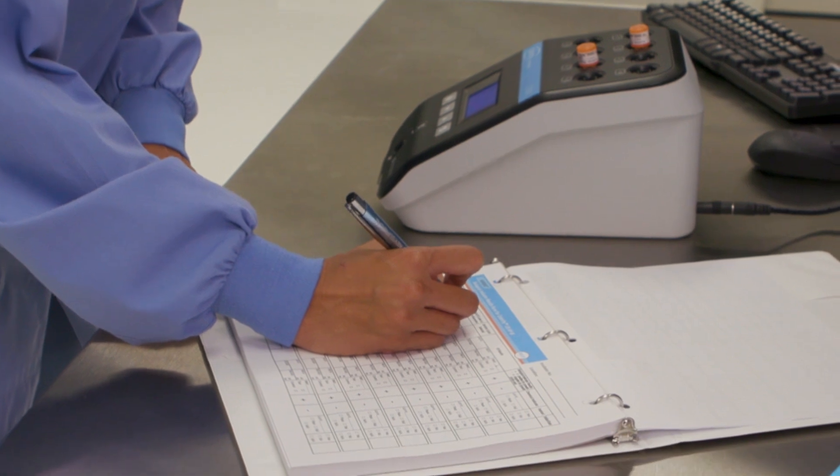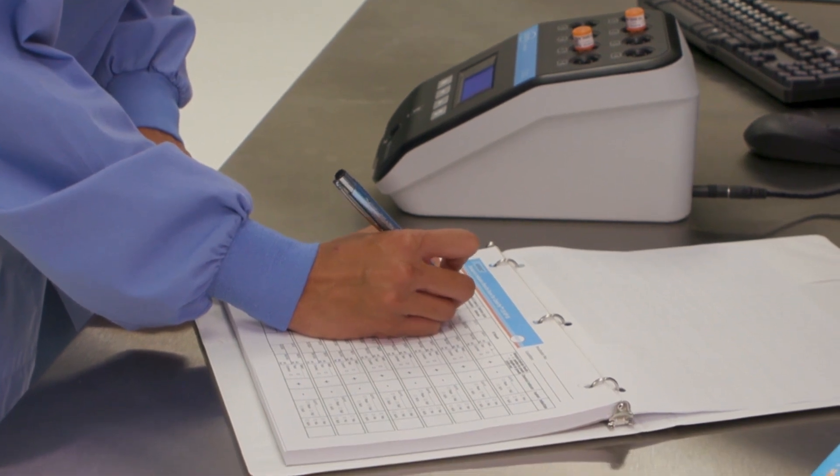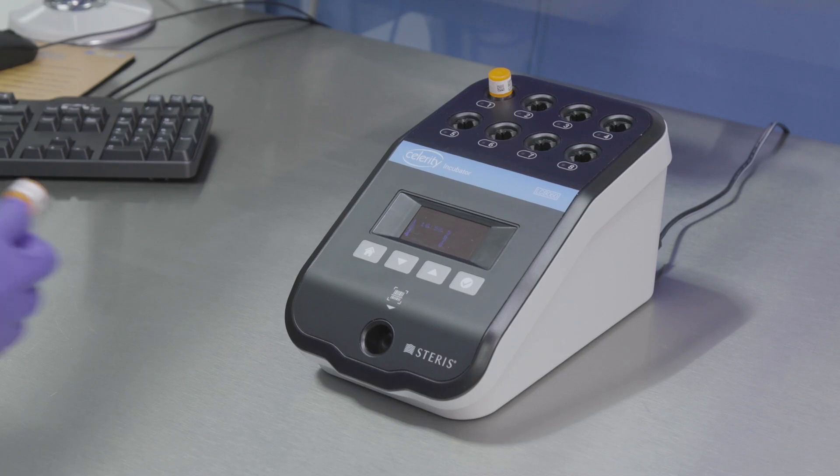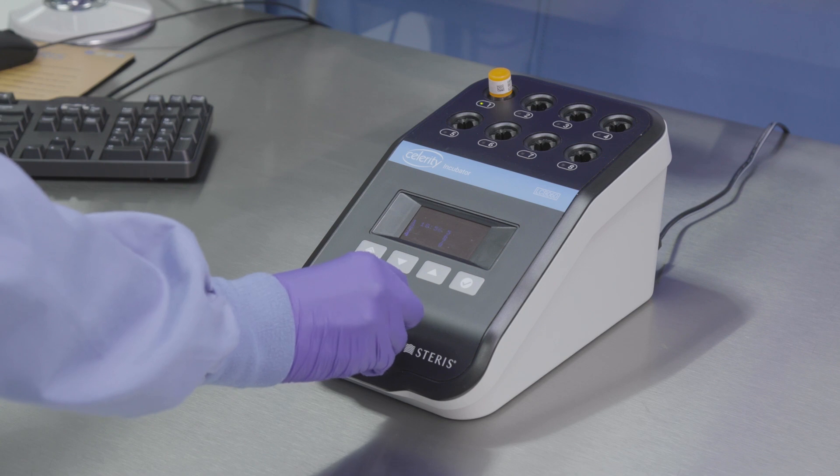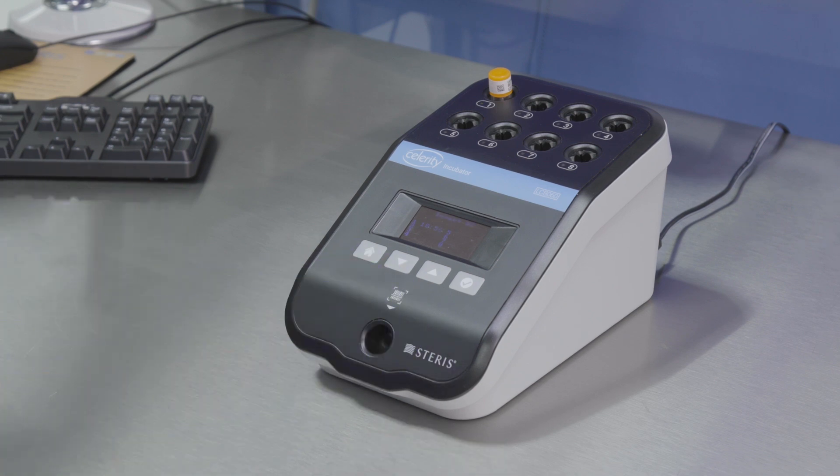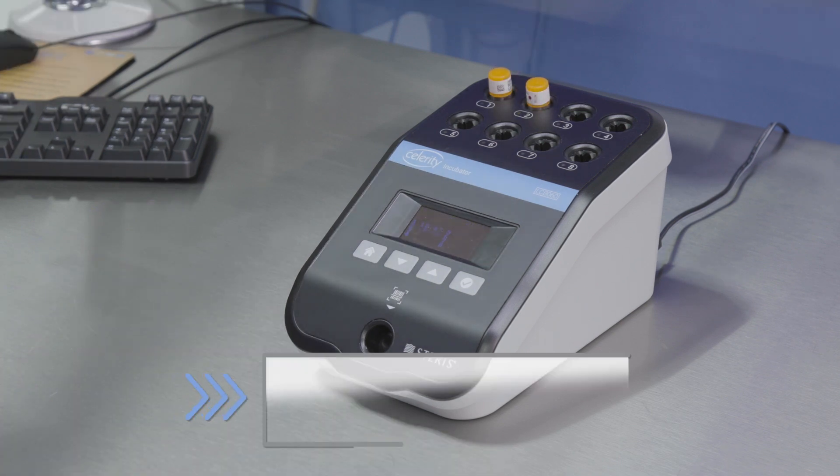Biological controls should be performed each day a test BI is used and whenever a new BI lot is used. Scan and activate an unexposed control BI as previously described. Identify the BI as the control and place the control BI in the Celerity incubator.